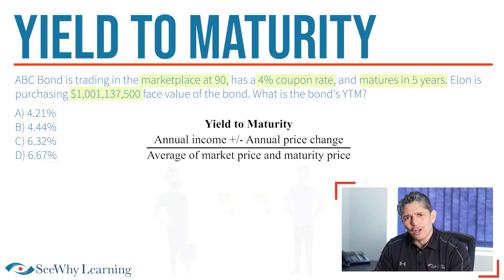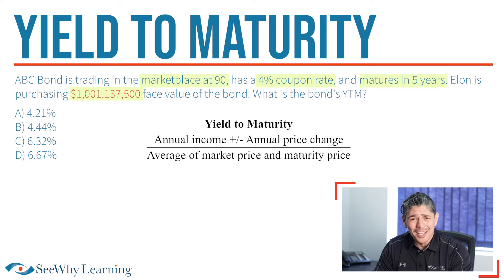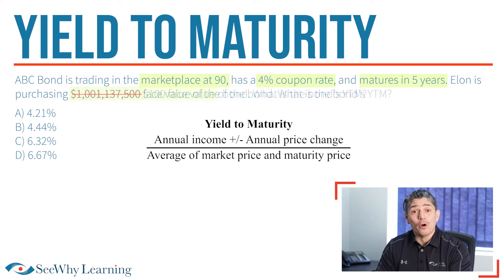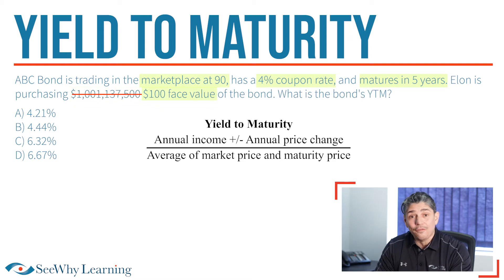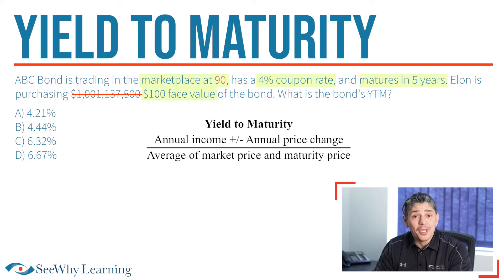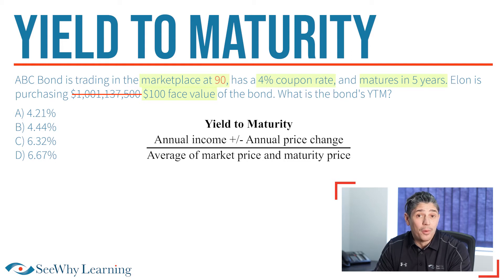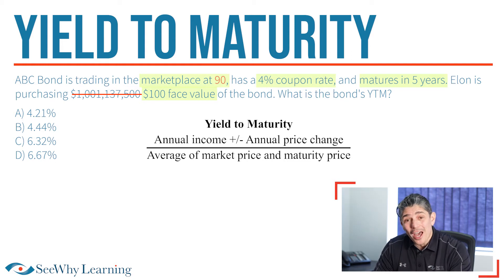What a headache it would be trying to figure out what the 4% coupon payment would be on Elon's huge bond — it makes my head hurt just thinking about the math. So let's cross that out and pretend that Elon is only buying a $100 face value of the bond. It's so much easier. Now we don't have to modify the market price of $90 because that already refers to $100 face value of the bond. This is simply how bonds are priced, and you need to know that.